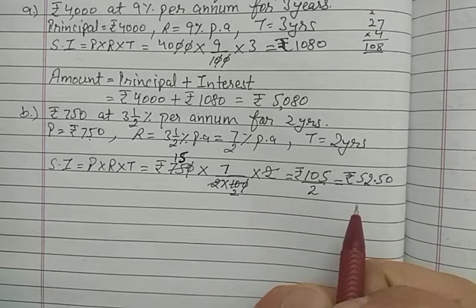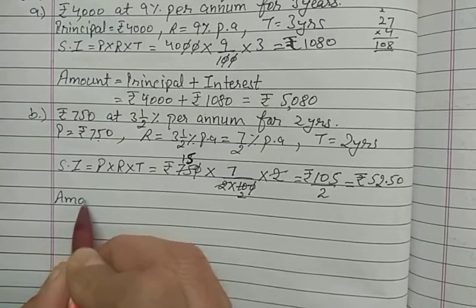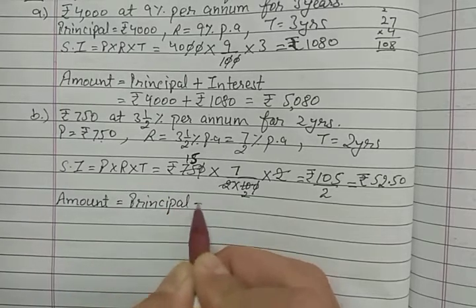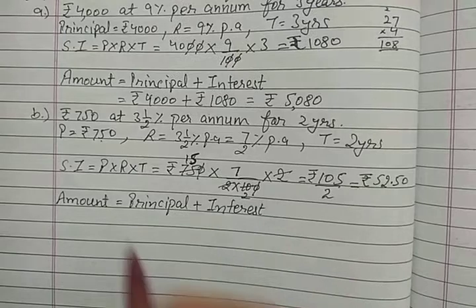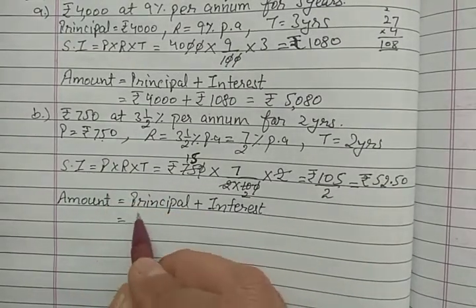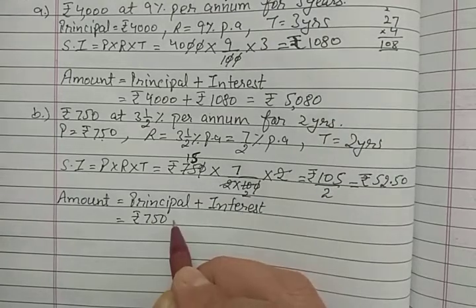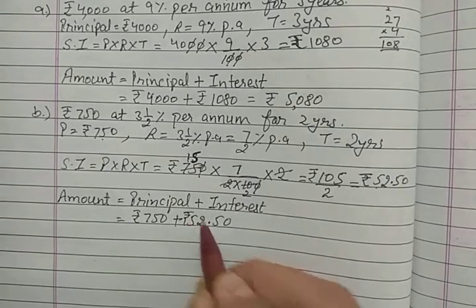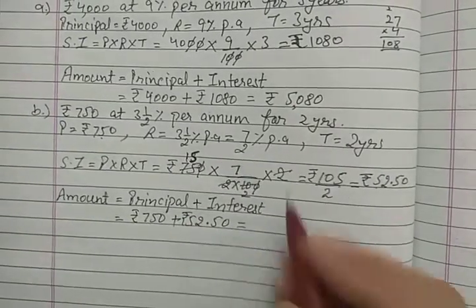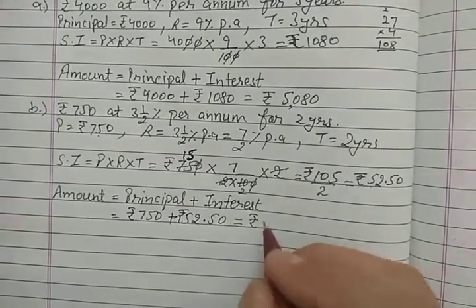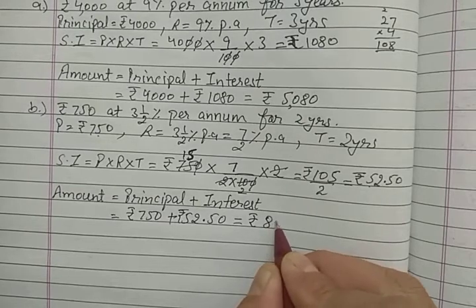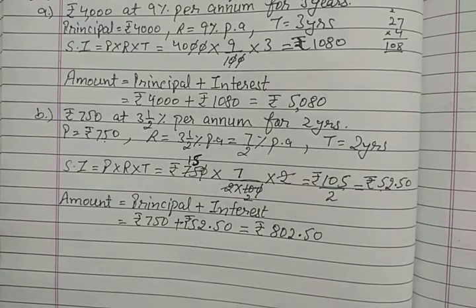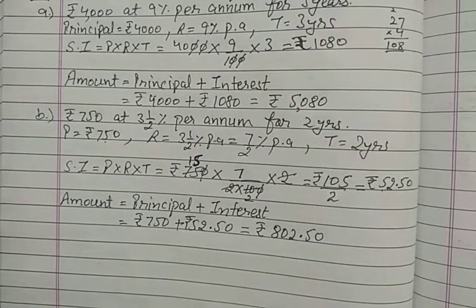Simple interest is 52 rupees 50 paise. Now calculate the amount: Amount = Principal + Interest = 750 + 52.50 = 802 rupees 50 paise. So the amount is rupees 802.50. I hope it is clear how we calculate the amount by adding principal and interest.